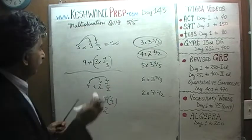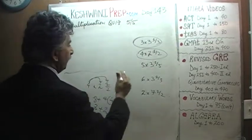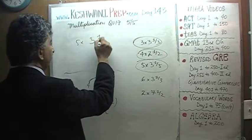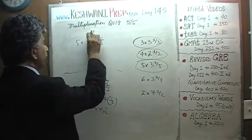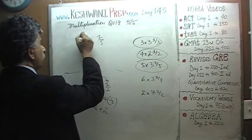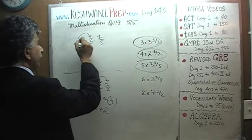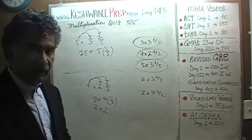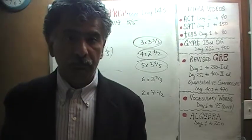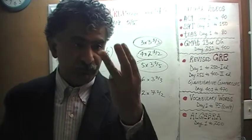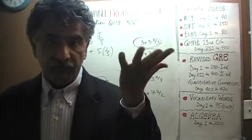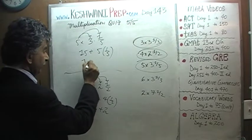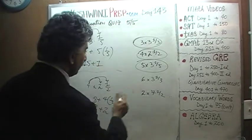Let's do the next one: five times three and one fifth. Five times three is fifteen, and if you have five fifths — one fifth, two fifths, three fifths, four fifths, five fifths — five fifths make a whole. So five fifths is one, and it's fifteen plus one.